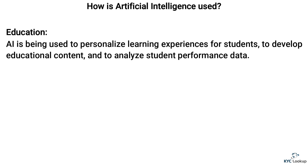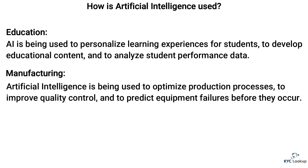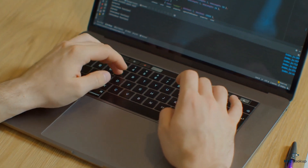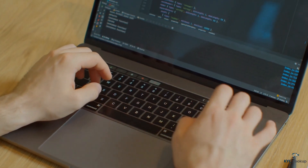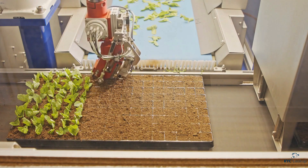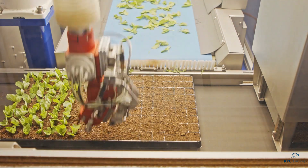In education, AI is being used to personalize learning experiences for students, to develop educational content, and to analyze student performance data. In manufacturing, artificial intelligence is being used to optimize production processes, to improve quality control, and to predict equipment failures before they occur. These are just a few examples of how AI is currently being used. As the technology continues to evolve, we can expect to see it used in even more innovative and impactful ways.